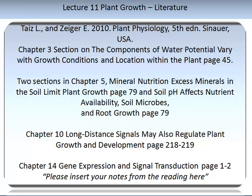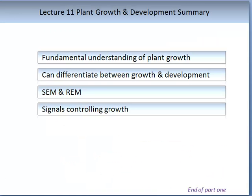The sections of the Taiz and Zeiger recommended textbook that I recommend you read and make notes on should be inserted into your lecture notes at this point. Once you have listened to this lecture, watched the associated videos, and read the recommended literature, you will have a fundamental understanding of plant growth. You will be able to differentiate growth and development and understand how one can measure development. Two important components of plant growth are SEM and REM — please familiarise yourself with these concepts and the important role they play. Finally, we have looked at auxin, the main signal controlling growth; there are other hormones that control growth which we will look at in due course. That brings us to the end of this lecture and part 1.